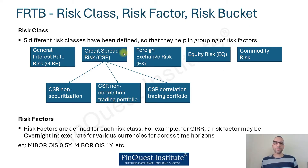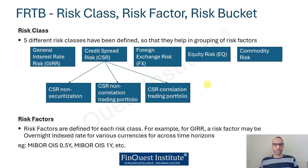Credit Spread Risk is further divided into three subcategories. Once the risk classes are defined, the next step is to group the risk factors, as that is the natural progression. For example, under GIRR, let's talk of a specific risk factor called an Overnight Index Swap (OIS). Here I've taken an example of MIBOR OIS.